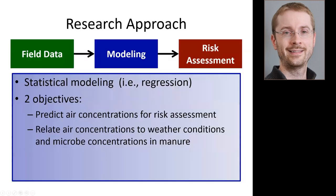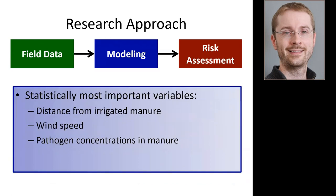The modeling was statistical, with two objectives: predicting air concentrations for direct use in the risk assessment, and relating air concentrations to weather conditions — which gives us something to use for recommending best management practices. The most important variables other than distance were wind speed and the pathogen concentrations in manure. Those findings make sense, and it's reassuring that the data reinforced those as the important factors.